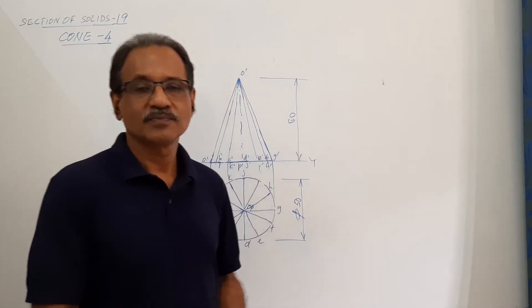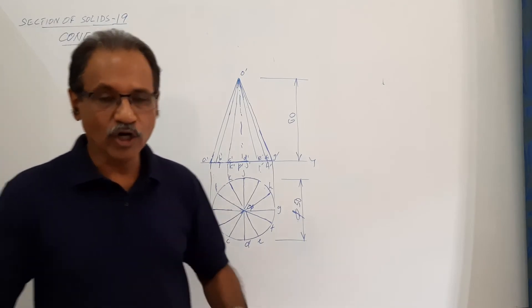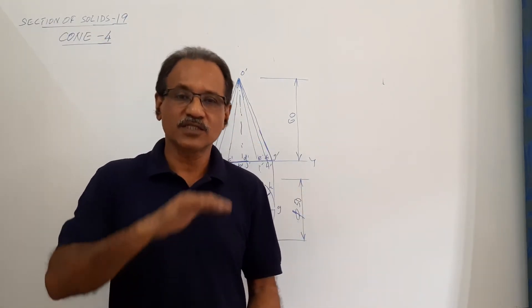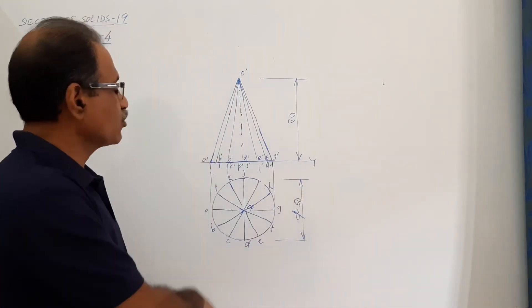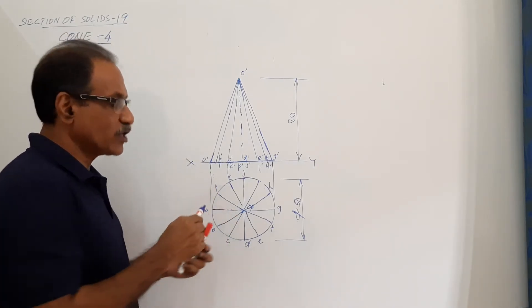Hi students, Cone 4. A cone 50mm diameter, 60mm axis, standing on its base on HP.